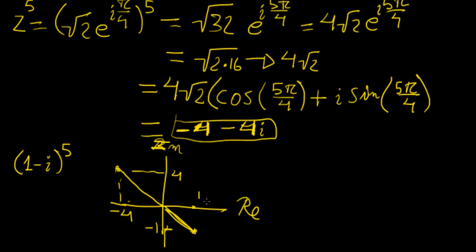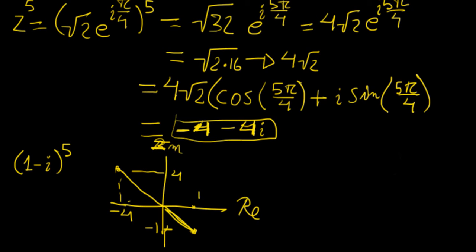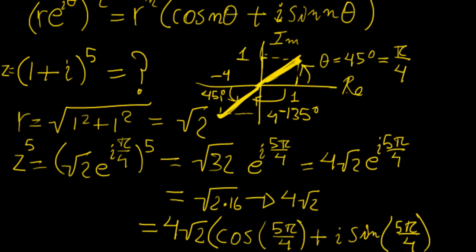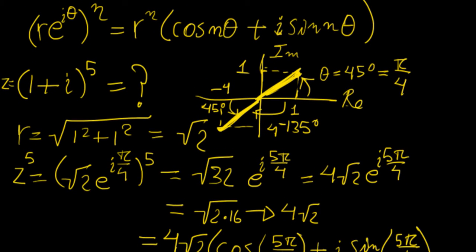Now, De Moivre's theorem is very useful for finding a lot of different things, essentially with powers, but it is also useful for finding roots of complex numbers. That's something I'm going to leave to a later video. But for now, just remember that if you're given a complex number and you want to find the value when you raise it to some power, it could be any power, it could be something like 2 plus 3i to the power of 100.